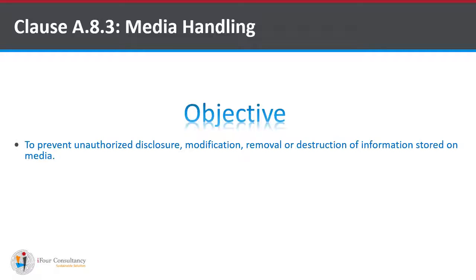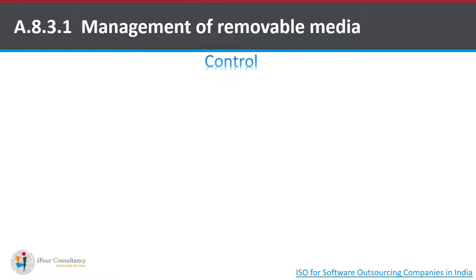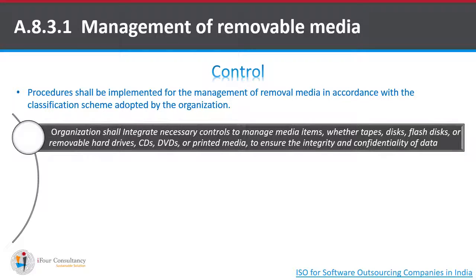For 8.3.1, Management of Removable Media, the control states that procedures shall be implemented for the management of removable media in accordance with the classification scheme adopted by the organization. The organization shall integrate necessary controls to manage media items — whether tapes, disks, flash drives, removable hard drives, CDs, DVDs, or printed media — to ensure the integrity and confidentiality of data.